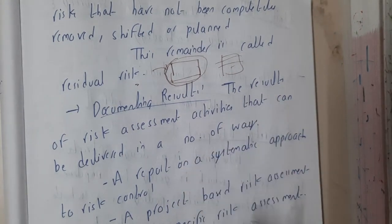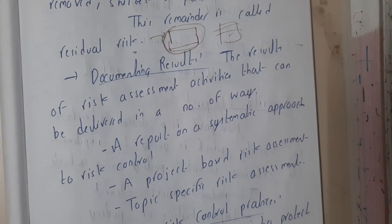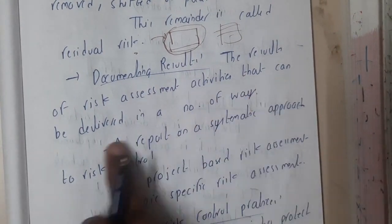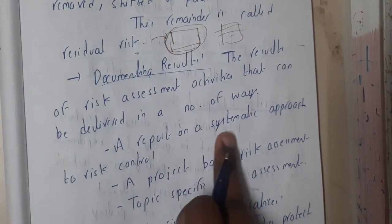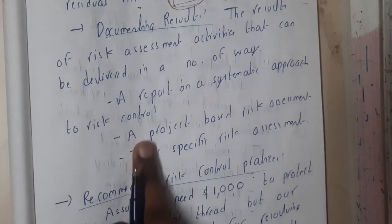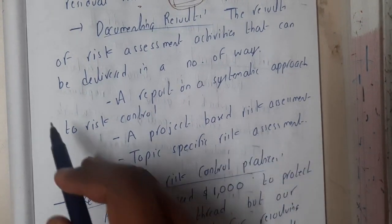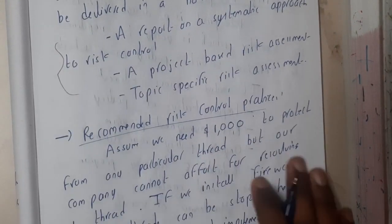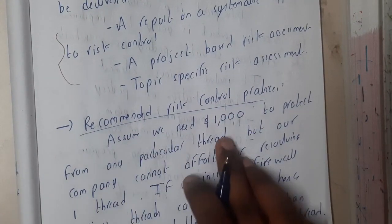Similarly, documenting results — everything in documented format will help someone else. If you write a detailed solution, someone can read and understand it easily. The results of risk assessment activities can be derived in a number of ways: a report on a semantic approach to risk control, a project-based risk assessment, or topic-specific research management.